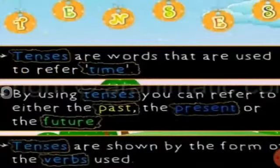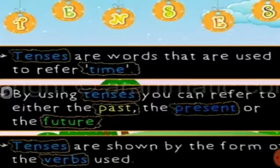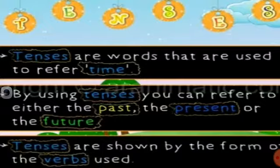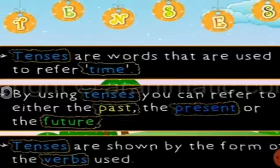Let's recall what tenses are. Tenses are words that are used to refer to time. By using tenses, you can refer to either the past — the time that has been passed, like yesterday — the present, the time which is passing, like today, or the future, the time that will come next, like tomorrow. Tenses are shown by the form of the verbs used.